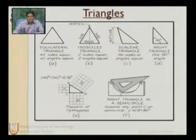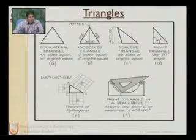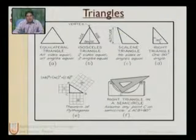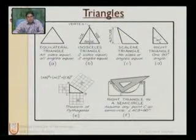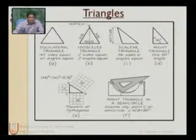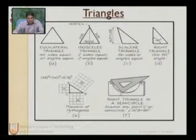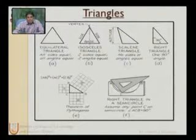A scalene triangle, represented in C, has no sides or angles that are equal. In a scalene triangle, no side and no angle is equal. The bottom line is called the base, and the height is called the altitude, which is used to find the area of the triangle.